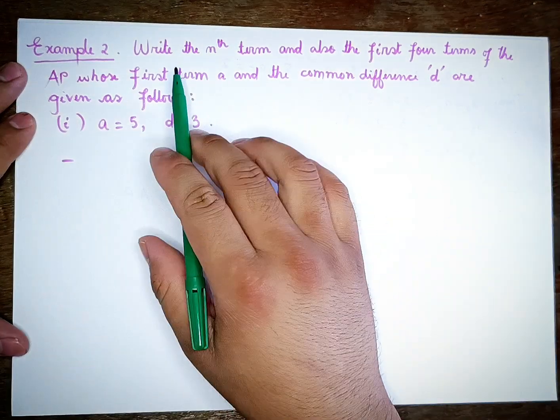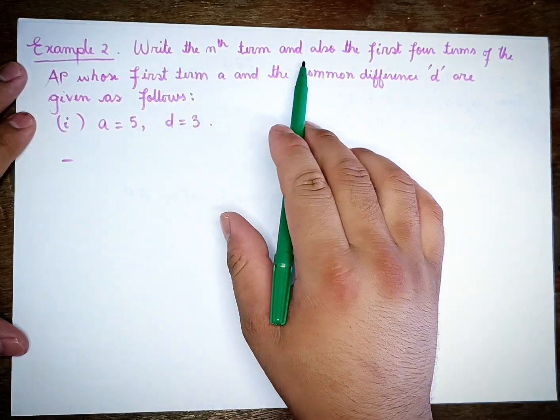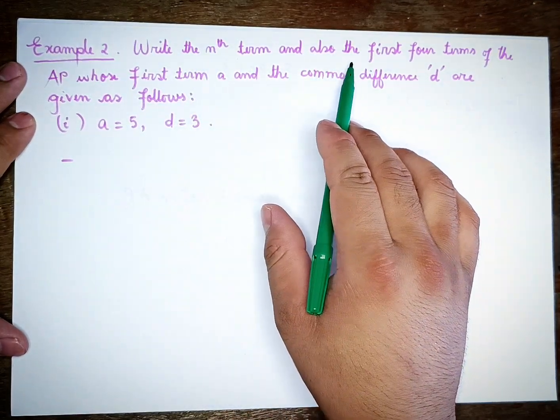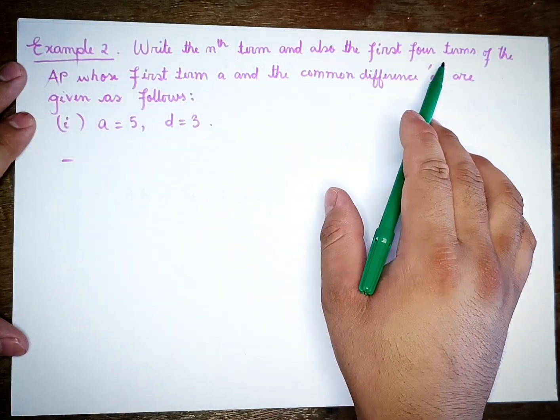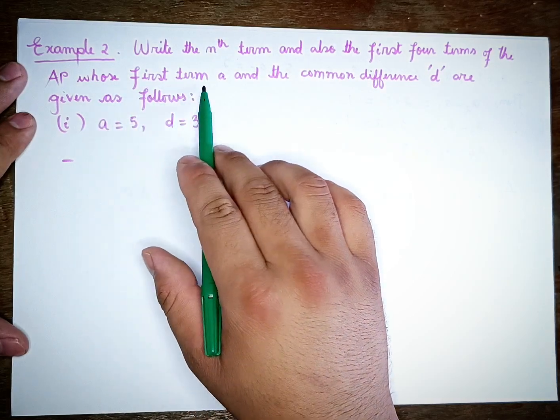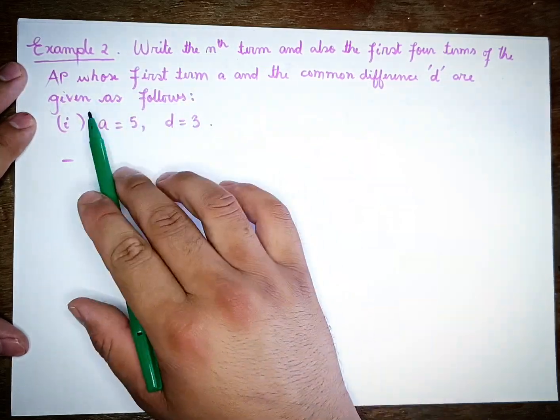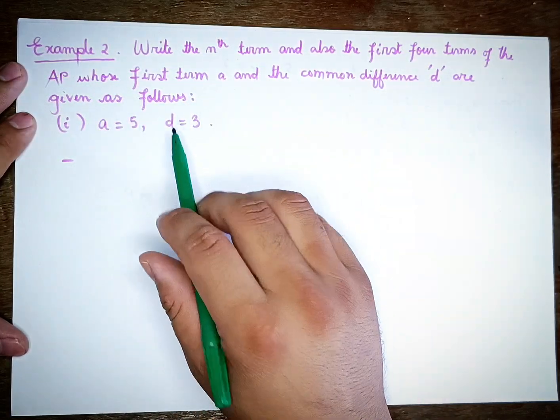Example number two. Write the Nth term and also the first four terms of the AP whose first term A and the common difference D are given as follows.